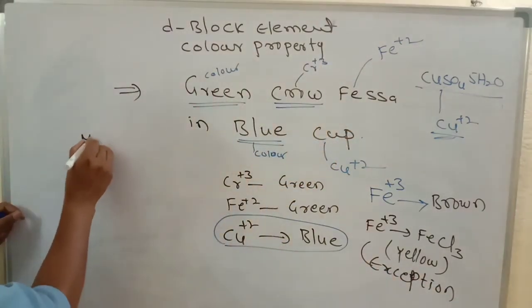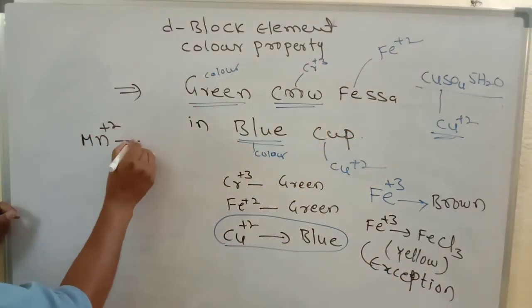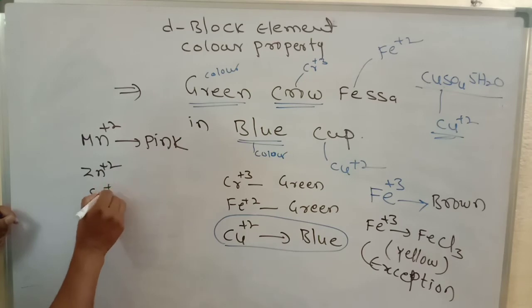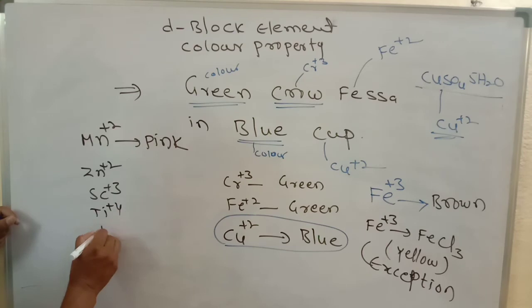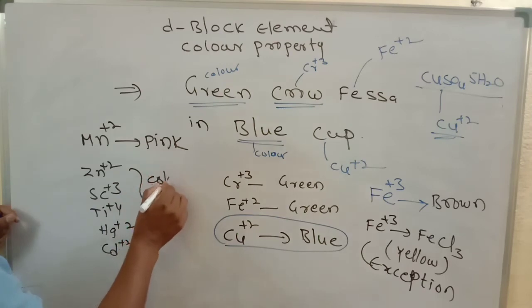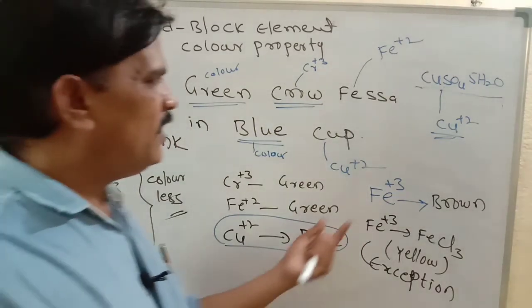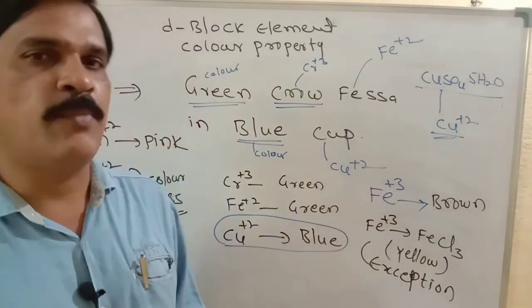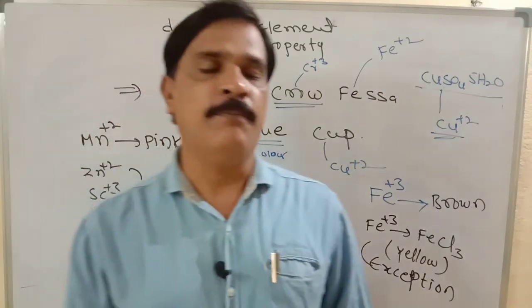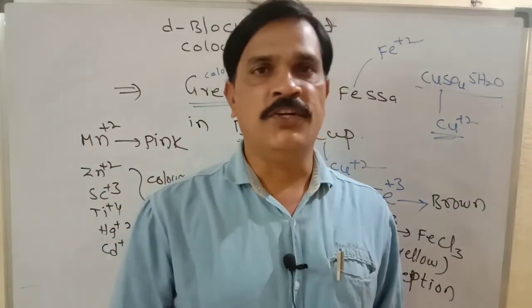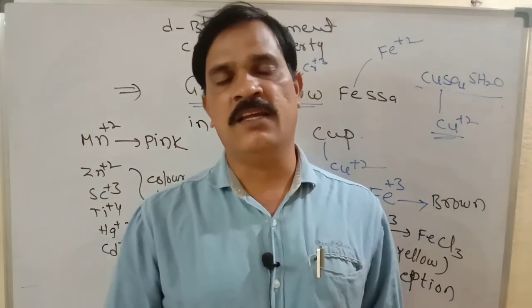Manganese²⁺ is always in pink color. Meanwhile, Zn²⁺, Cd²⁺, Sc³⁺, and Ti⁴⁺ are all colorless, as they have either D-0 or D-10 electronic configuration. These are the important ions for color property in D-block elements.